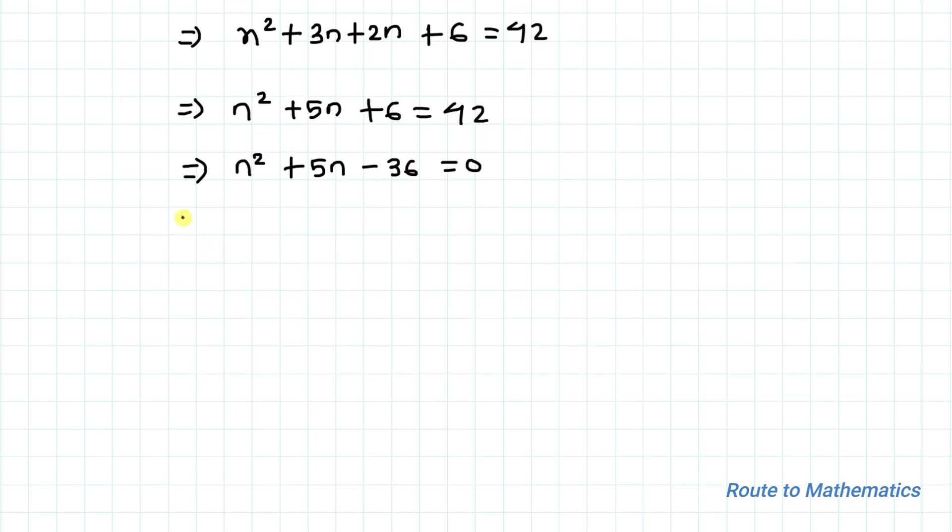By using middle term splitting method, we have n² + 9n - 4n - 36 equals 0.